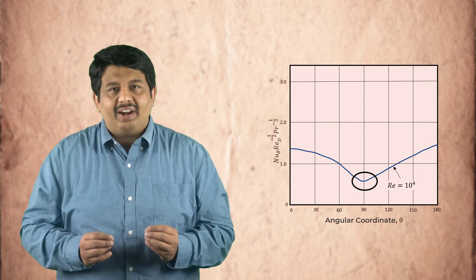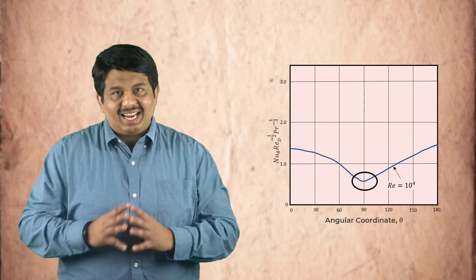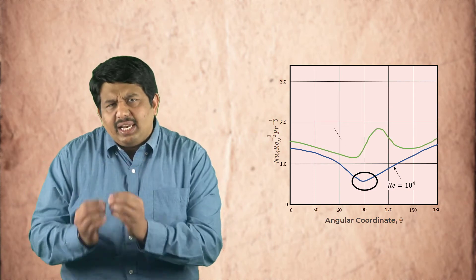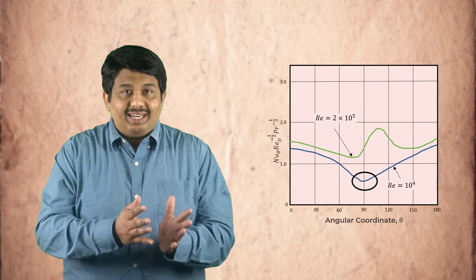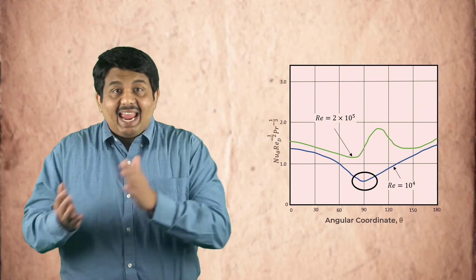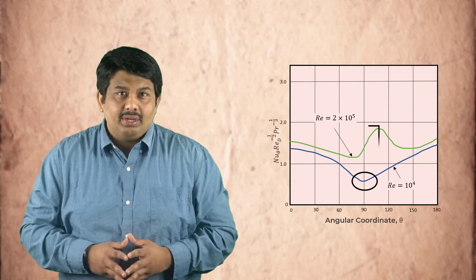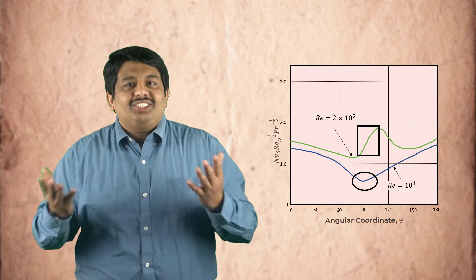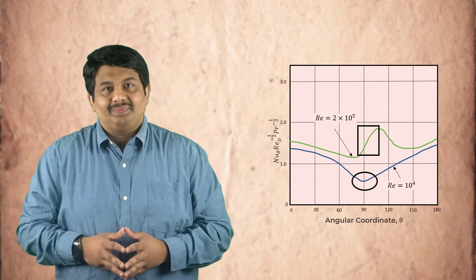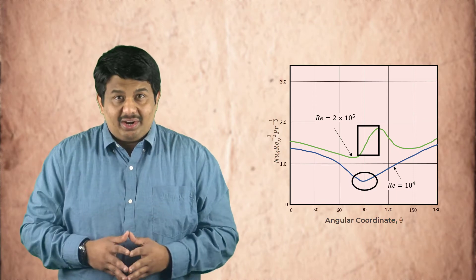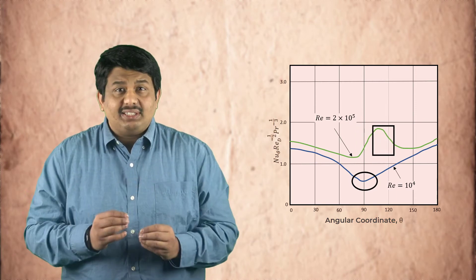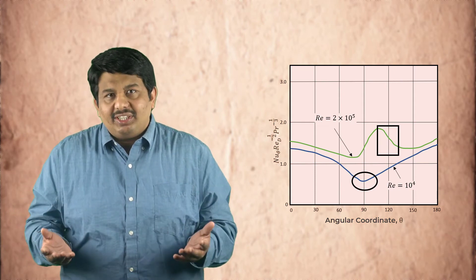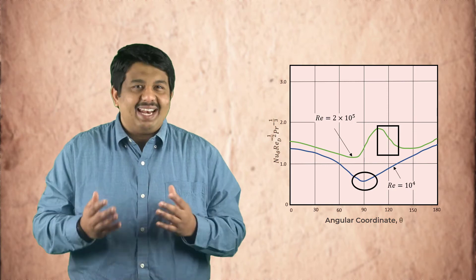This situation is slightly different for Reynolds number greater than 100,000. Initially, the Nusselt number profile still shows a decreasing trend till about theta of 80 degrees. Between 80 and 100 degrees, however, a sharp increase in heat transfer levels is observed, which is due to the laminar-turbulent transition. Beyond theta equals 100 degrees, the profile once again shows a decreasing trend till the separation location, after which it again increases because of enhanced mixing.